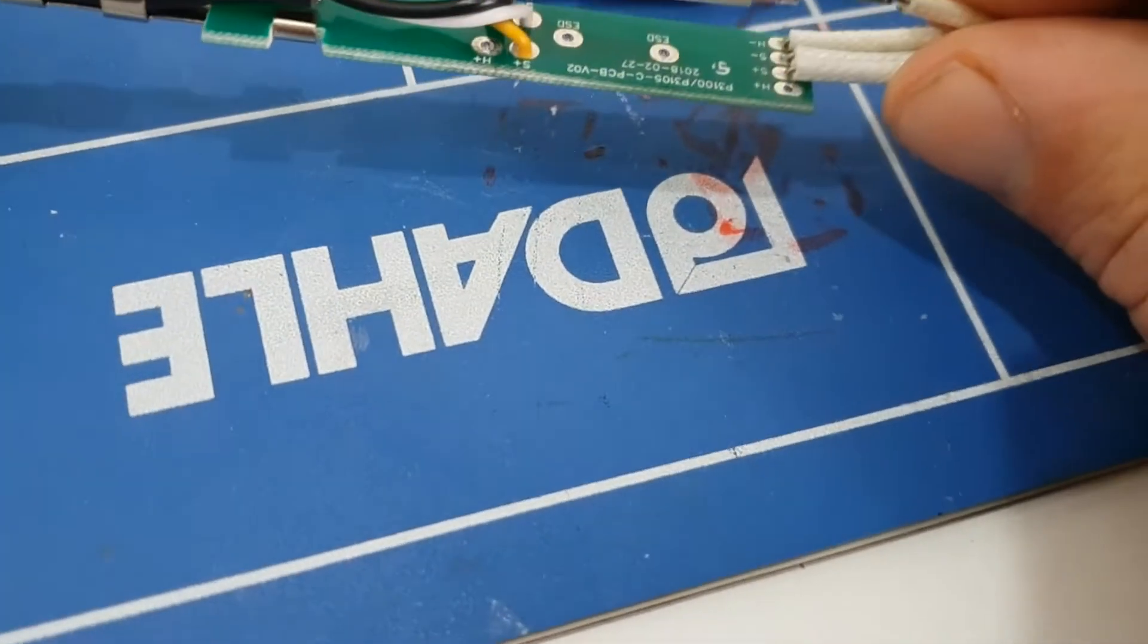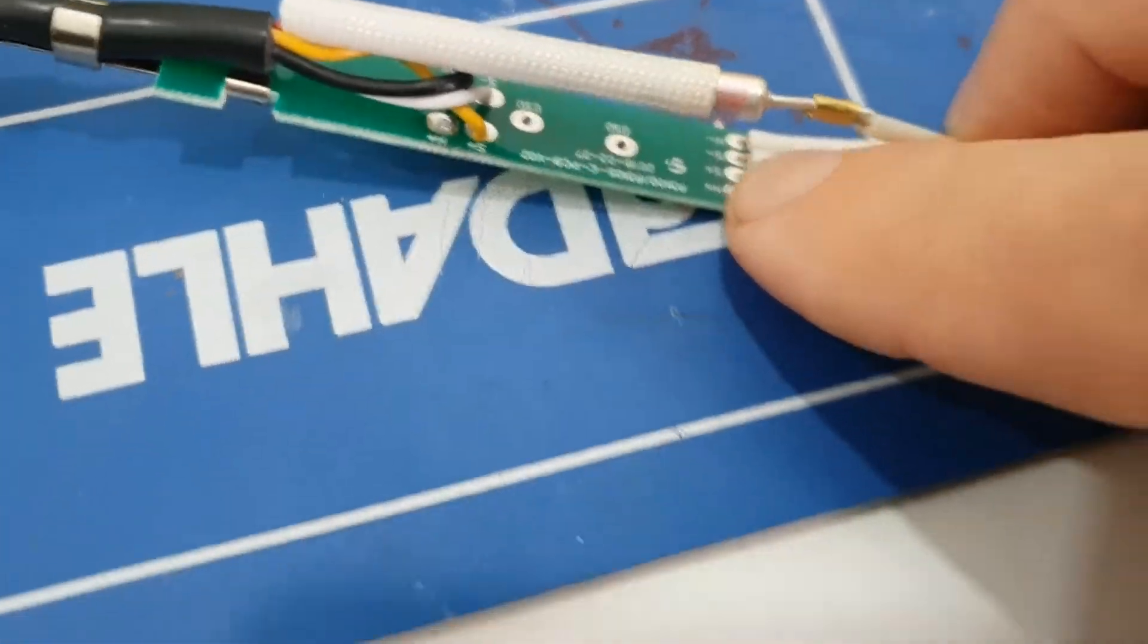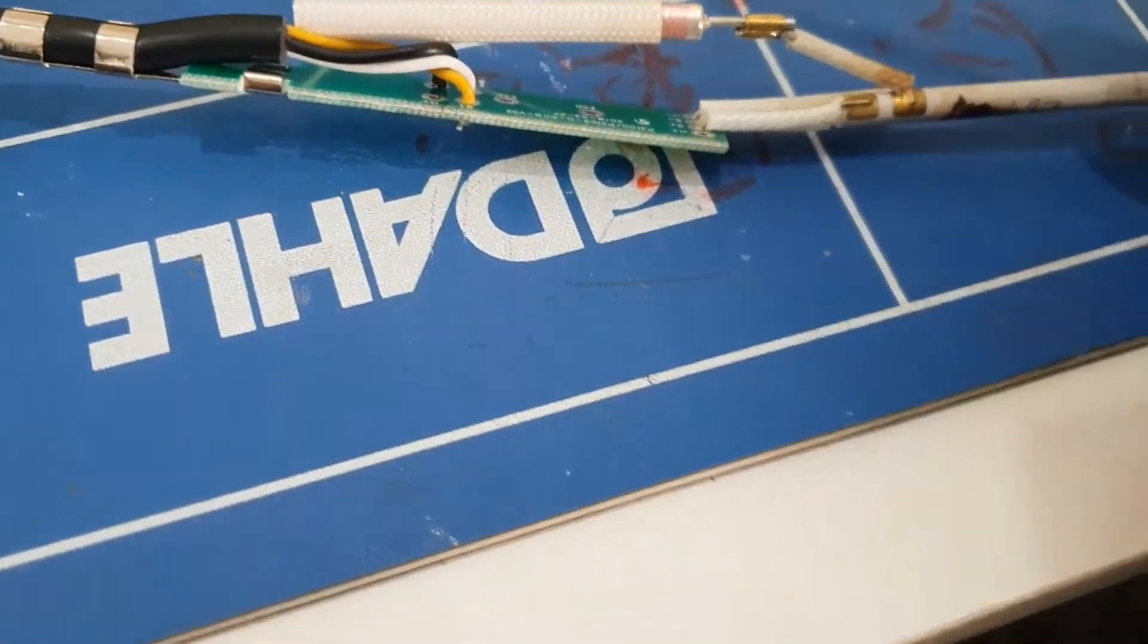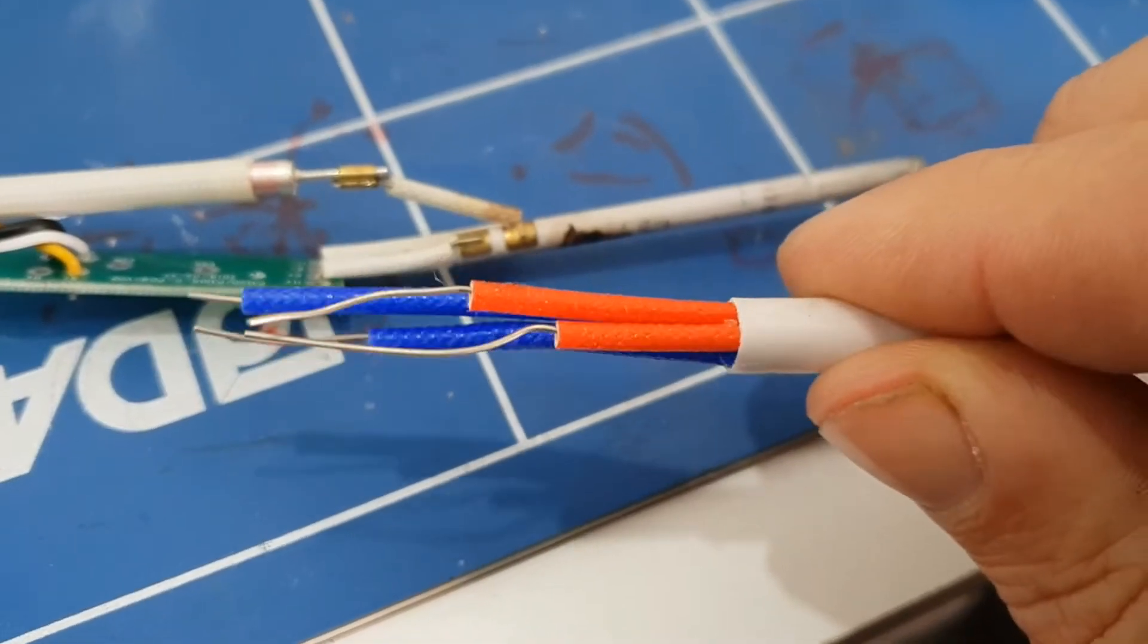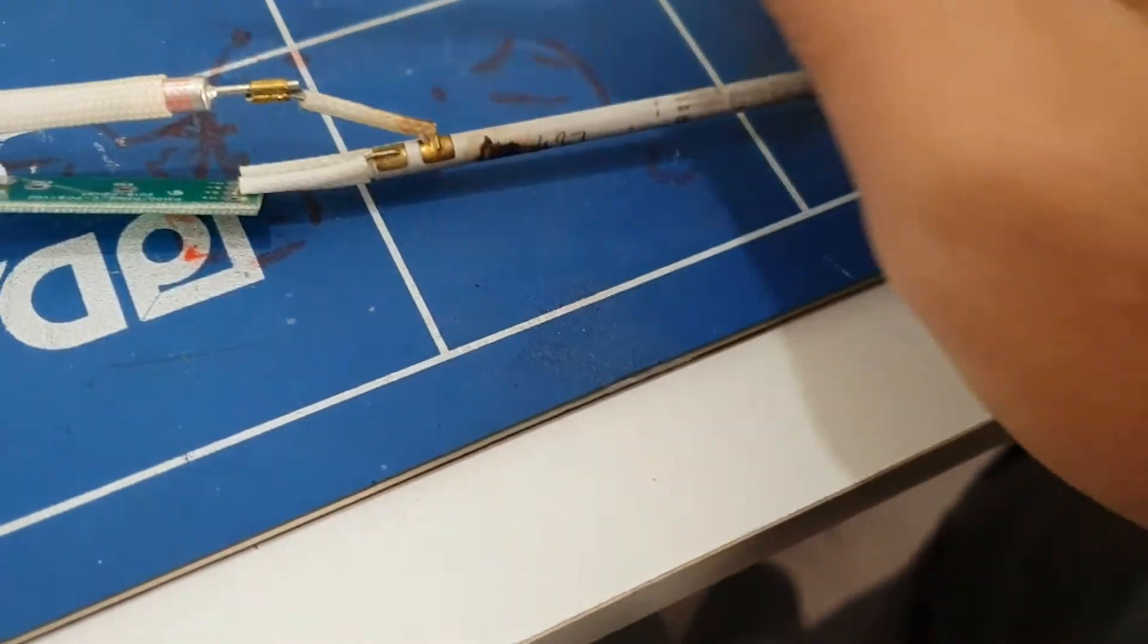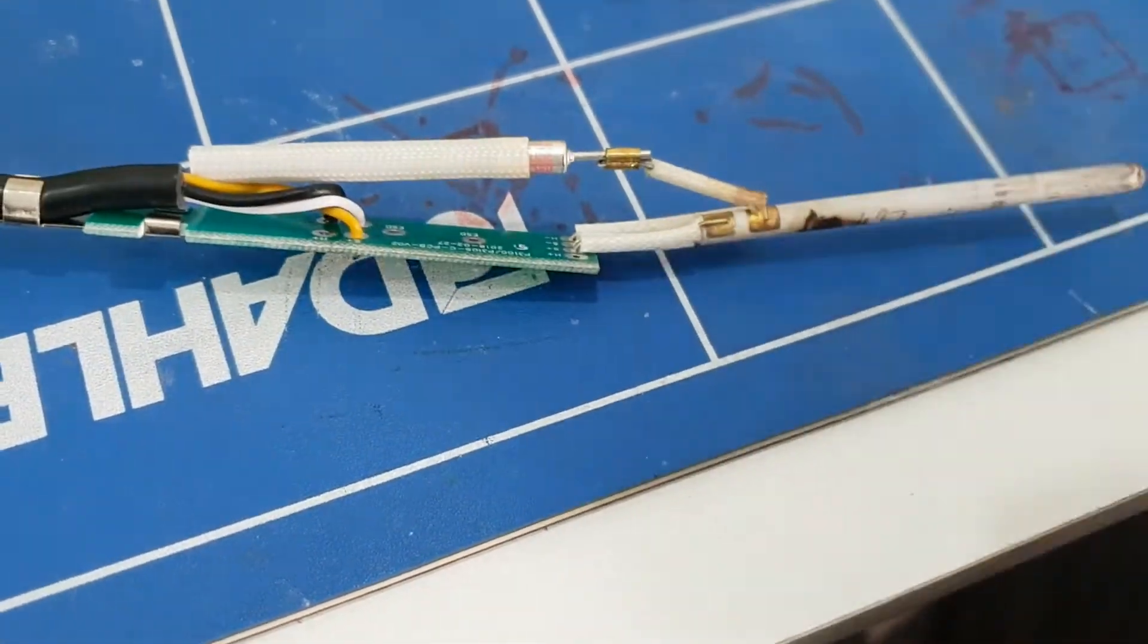First thing we need to do is get this off. You'll see down there on the board it says H, SSH plus and minus. So that'll be the heater and the sensor. Obviously we've got two reds, two blues, and I'm assuming 99% sure that the heater is the red and the blues will be the sensor. So we need to now just remove that, desolder it, and stick the new one on.